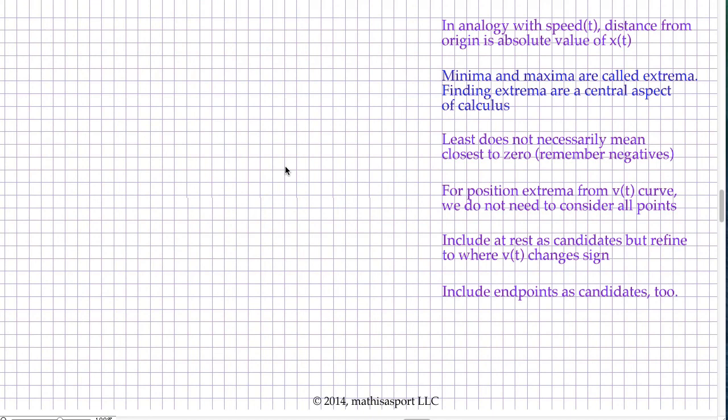when we move to position extrema from the V of T curve, we don't have to consider all the points. Instead, we start out by considering all those places where the velocity is zero, though we have to refine that to places where the velocity as a function of time actually changes sign. And we need to include endpoints as candidates, too. Once we've done that, we're in a position to choose from among those candidates to find the actual global extrema.